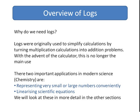There are still two very important applications in modern science, especially in chemistry. These are representing very small or very large numbers conveniently. You're already used to this from things like pH and pK.